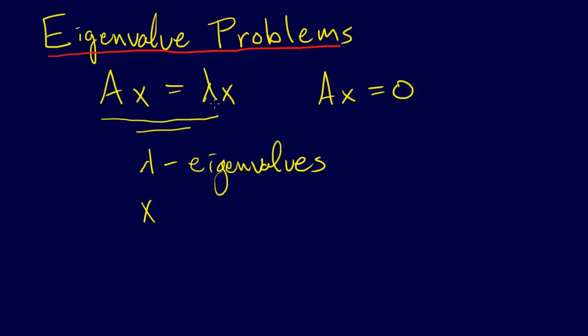So for each lambda that makes this true, there will be an x that corresponds to that lambda. And the x's that correspond to the lambdas will be called the eigenvectors.